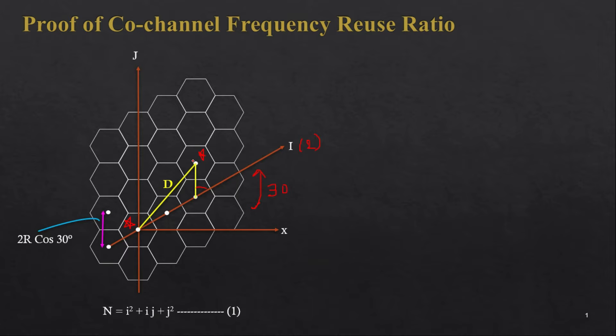These two are known as co-cells, and we want to find out the reuse ratio distance between them. If you put the values of i and j into this equation, you get a cluster size equal to 7, because i = 2 and j = 1. So 2² = 4, plus 2·1·1 = 2, so 6, and 6 + 1 = 7. So the cluster size N = 7.